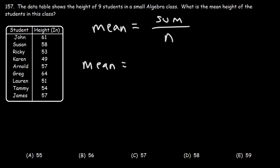61 plus 58 plus 53 plus 49 plus 57 plus 64 plus 51 plus 54 plus 57. The total sum is 504 and we have nine students, so n is nine. 504 divided by nine is 56.